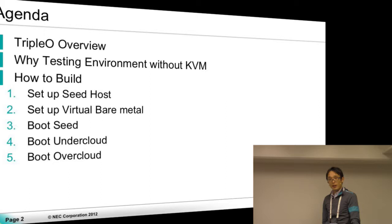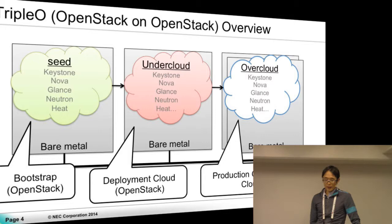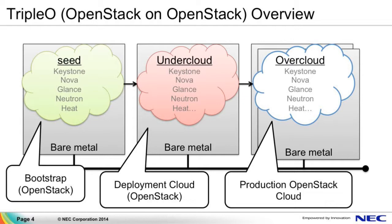I'd like to introduce you to how to build a testing environment for Triple O without KVM. Triple O is a program aimed at installing, upgrading, and operating OpenStack Cloud using OpenStack-owned cloud facilities. The basic concept is: Seed Cloud is a single-node bare-metal cloud to deploy UnderCloud. UnderCloud is also a single-node bare-metal cloud — it owns data center resources and deploys OpenStack OverCloud. OverCloud is a many-node cloud and is the user-facing OpenStack.